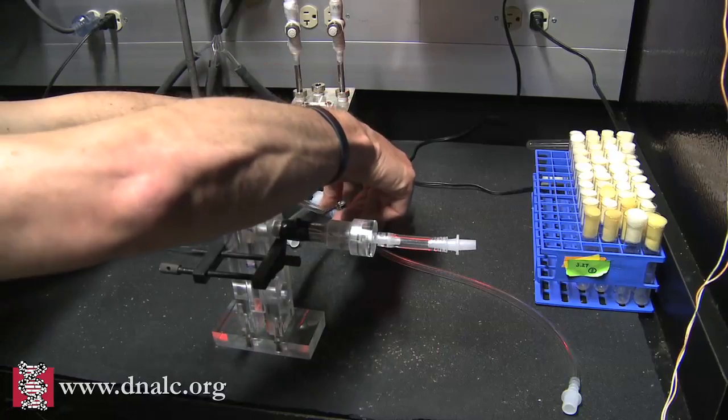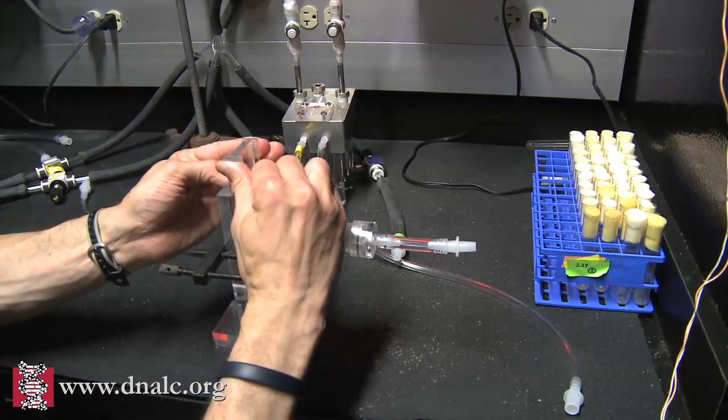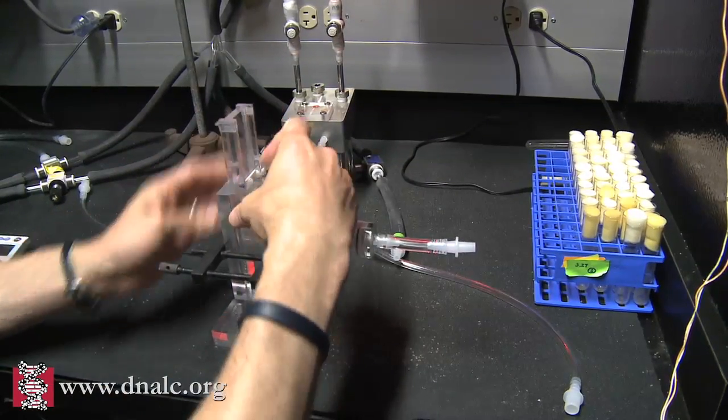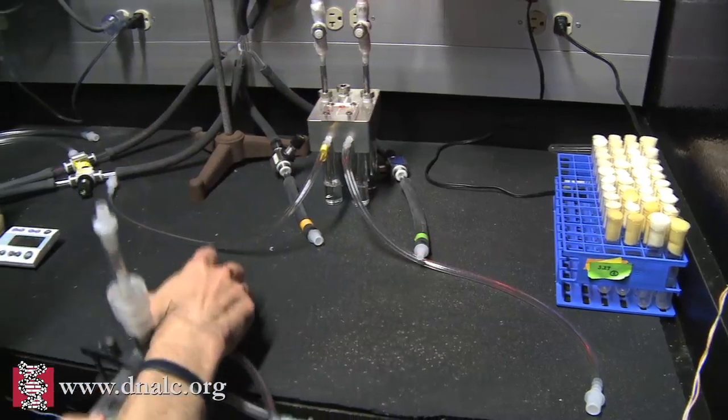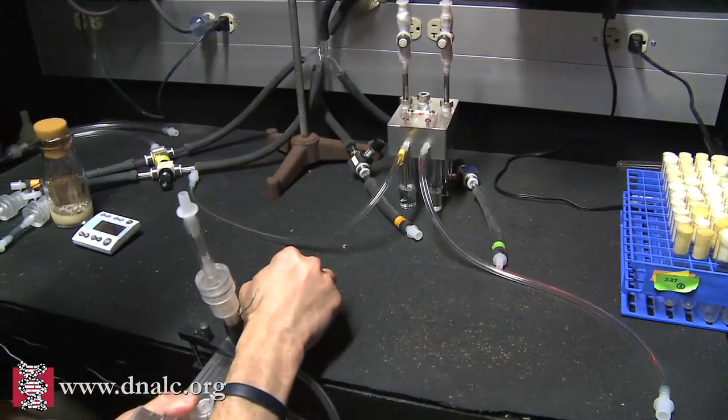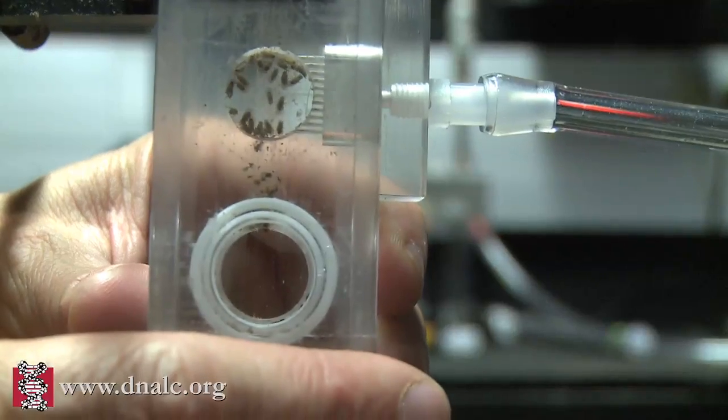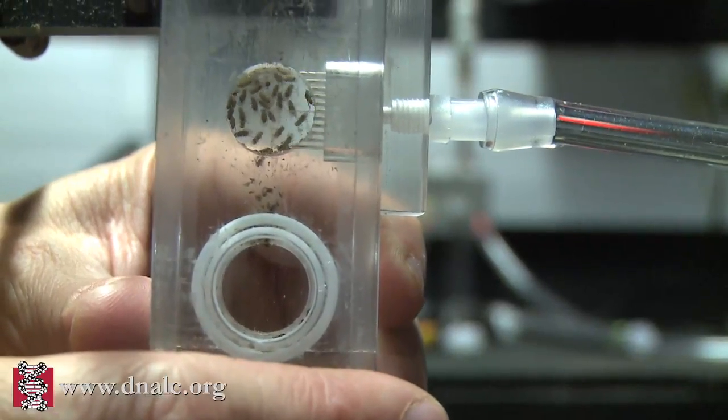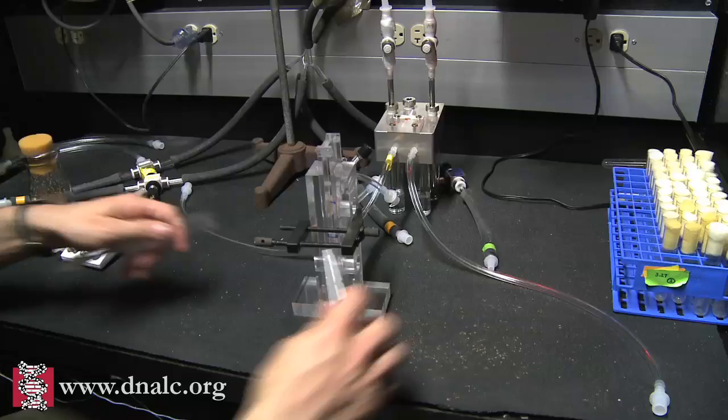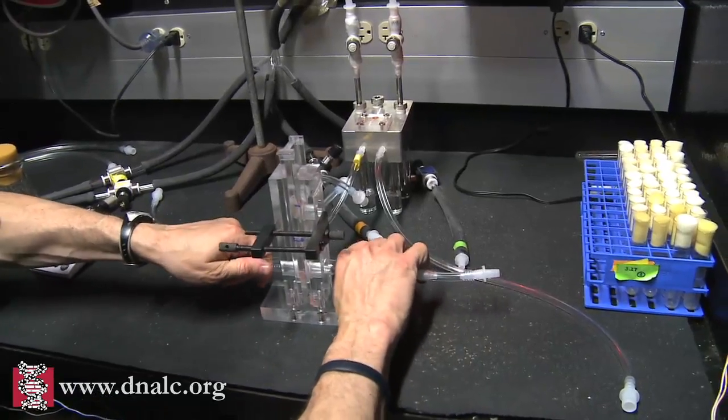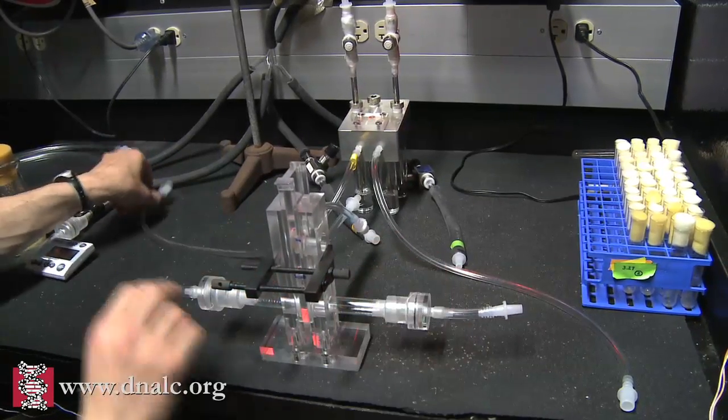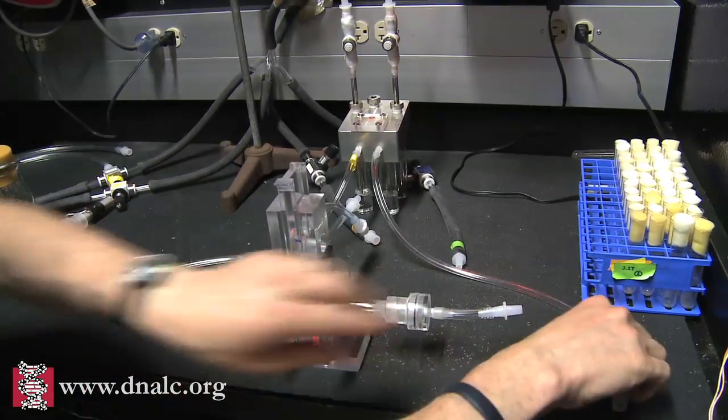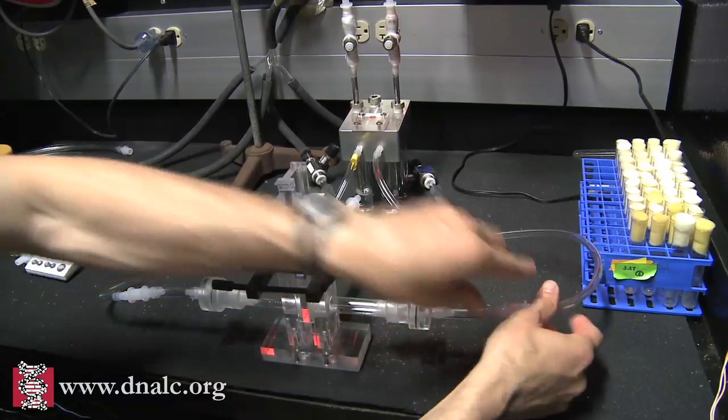After the flies have learned their lesson, we test their memory by transferring them to a little elevator. We do that by gently tapping them out of the training tube into the elevator. And now we attach the two arms of the T-maze. The left arm is going to get OCT, and the right arm is going to get MCH.